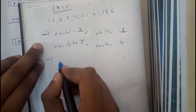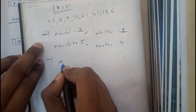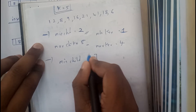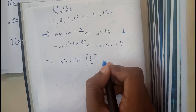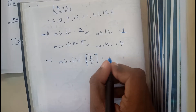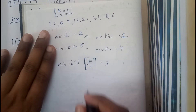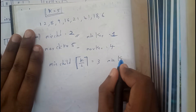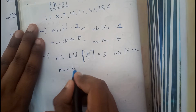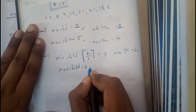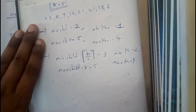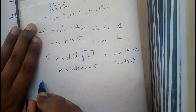The second point is about the internal node. The minimum children should be k/2, so 5/2 = 2.5. We take the ceiling, which gives us 3. So minimum keys will be 2. The maximum children will be k, which equals 5, and maximum keys will be 4.